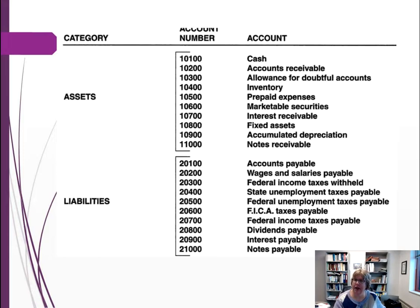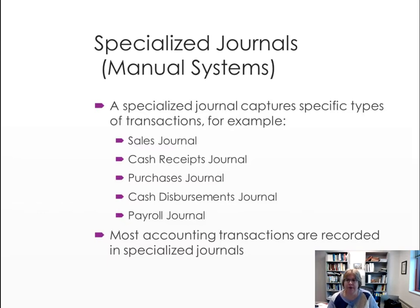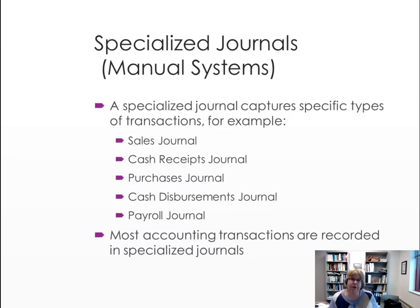Here's a partial chart of accounts showing assets and liabilities in order — cash first, then accounts receivable, inventory, and current liabilities. To simplify entering transactions, we use two types of journals: specialized journals and the general journal. Specialized journals are for transactions that occur frequently in the business. For example, sales — if you're having multiple sales a day and want to track each individual sale, you'll use a specialized journal.